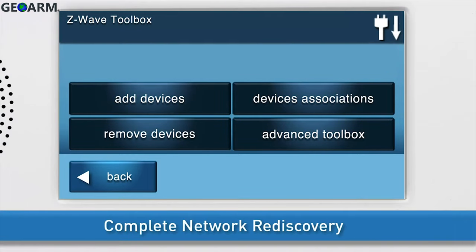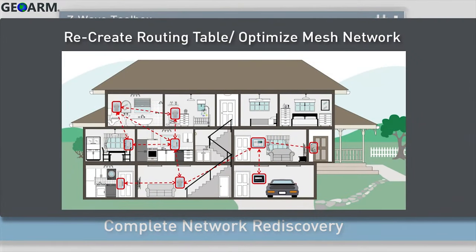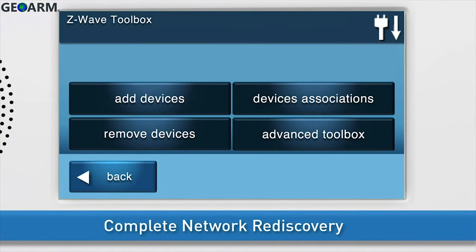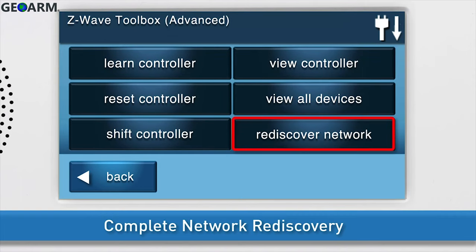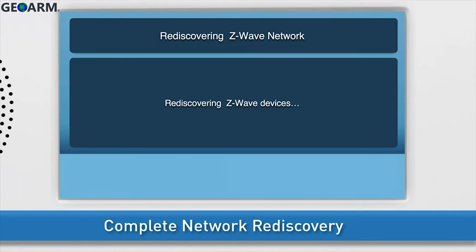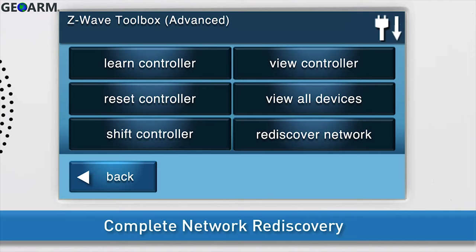Lastly, complete a network rediscovery. During network rediscovery, the panel will recreate its Z-Wave routing table and optimize the mesh Z-Wave network. To initiate a network rediscovery, navigate to the Z-Wave Toolbox, then press Advanced Toolbox. Press Rediscover Network. The panel will display a message that it is rediscovering the Z-Wave devices, then automatically redirect you back to the Advanced Z-Wave Toolbox.